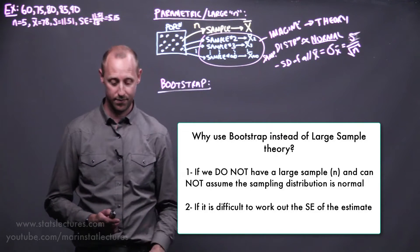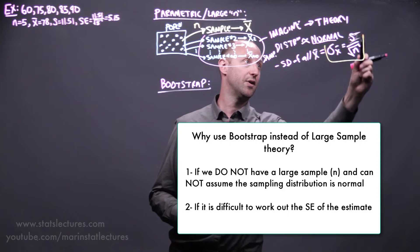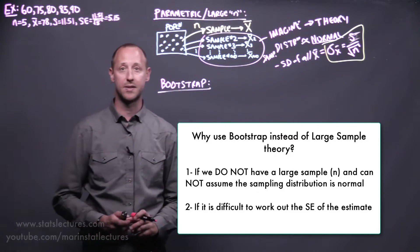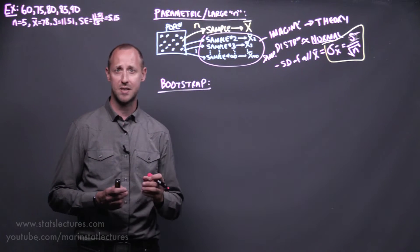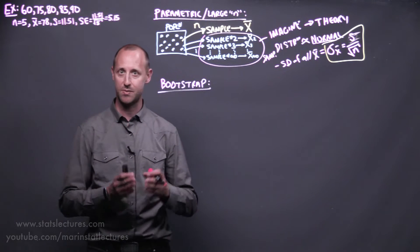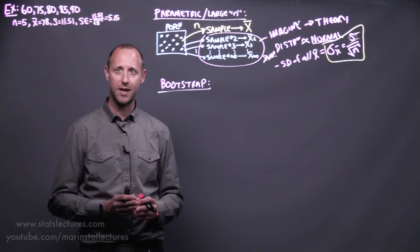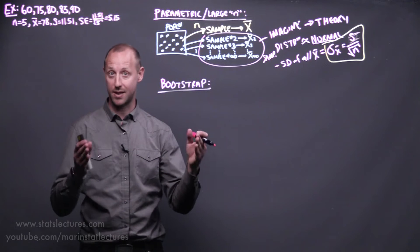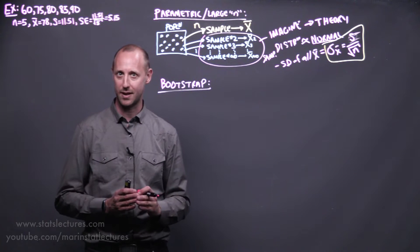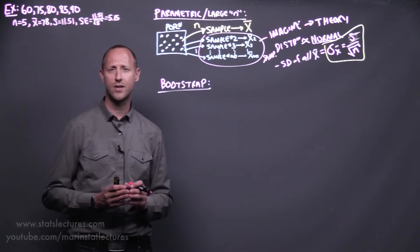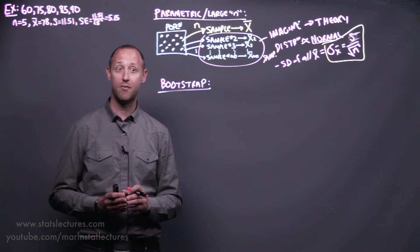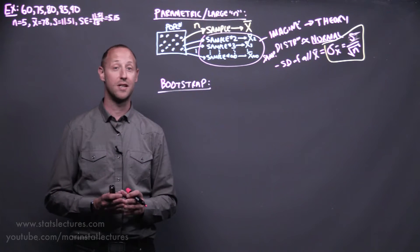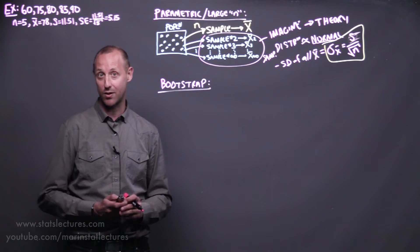A second reason, and maybe the more useful one, is that sometimes getting the standard deviation of the estimate — what we call the standard error — might be difficult. A mean is a pretty simple estimate and theory gives us the standard error as the sample standard deviation divided by the square root of n. But what if we were estimating the range from the 80th to 90th percentile? We can calculate those percentiles, but calculating the standard error for that difference might not be straightforward. Or if the estimate is some composite measure made up of multiple items, working out the standard error mathematically might be quite difficult or impossible.